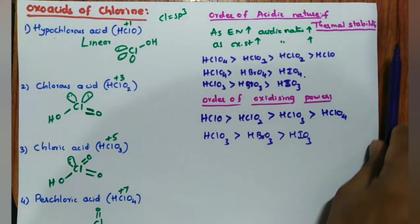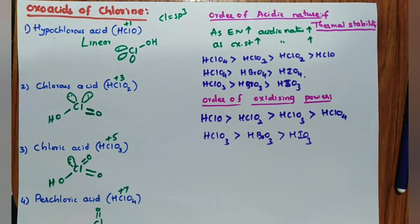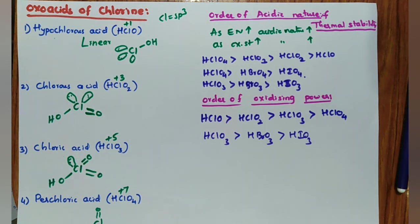These are the oxoacids of chlorine, sulfur, and phosphorus — definitely very, very helpful for NEET, JEE, and CET exams. Thank you for watching. If you are interested in my channel for the first time, subscribe. Thank you, have a nice day.